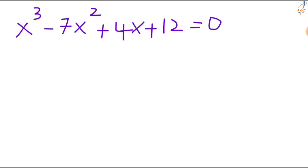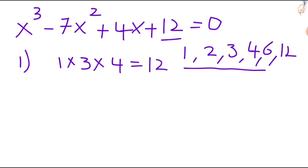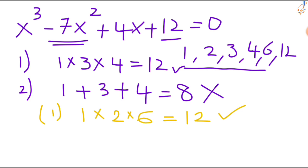Let's take another one. x cubed minus 7x squared plus 4x plus 12 equal to 0. First find the factors of 12: 1, 2, 3, 4, 6, 12. Take three numbers — try 1, 3, 4. Check conditions: when you multiply you get your constant, so first condition is satisfied. But when you add: 4 plus 3 is 7, plus 1 is 8 — it is not the same as your x squared coefficient. So this condition is not satisfied. Try another set of three numbers: take 1, 2, 6. When you multiply you get the constant value, first condition satisfied. When you add: 6 plus 2 is 8, plus 1 is 9 — it is not the same as your x squared coefficient.